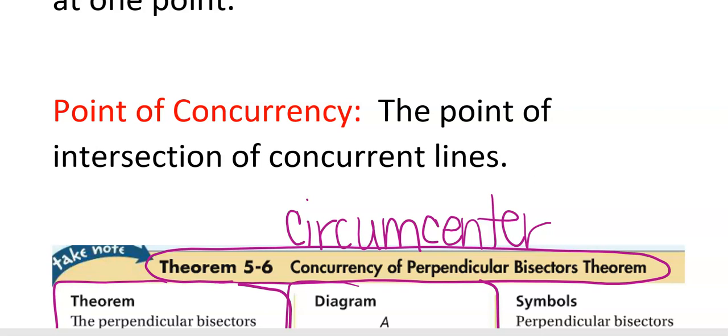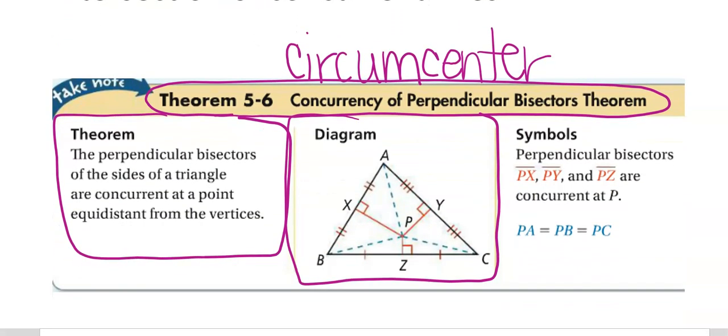One thing I do want you guys to add to your theorem is theorem 5.6. I want you to write circumcenter by it rather than concurrency of perpendicular bisectors. That's kind of a mouthful. So it basically stands for circumcenter. The one that I really would like you to use is circumcenter.